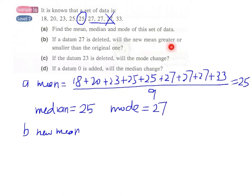So actually, we can do a prediction first. We remove one 27 from the set of data. And how can we make the prediction? What criteria should we base on to make our prediction? It's rather obvious that we have to compare the data to be removed and the original mean of the set of data.